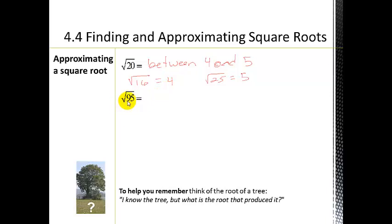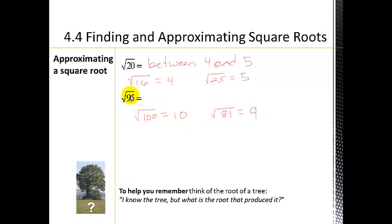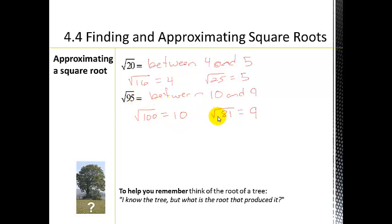Let's look at the square root of 95. Going back to our perfect squares: the square root of 100 is 10 and the square root of 81 is 9, so the square root of 95 is between 9 and 10. And since 95 is only 5 away from 100 but much further from 81, the square root of 95 would be closer to 10.